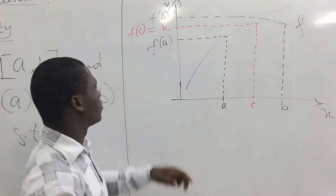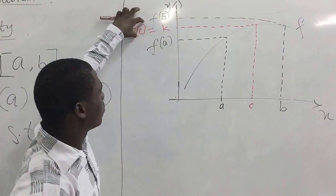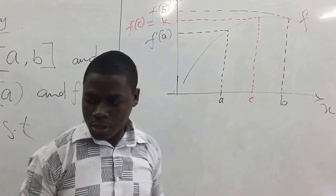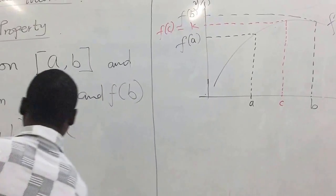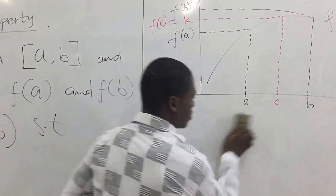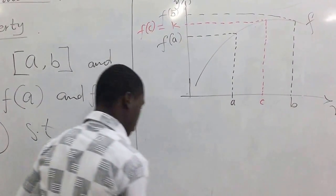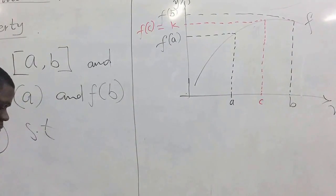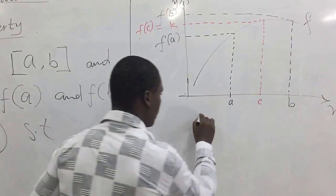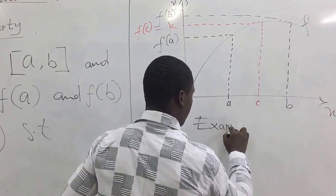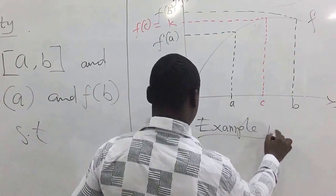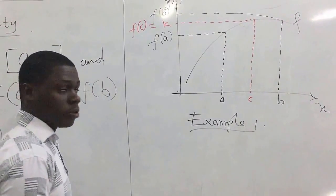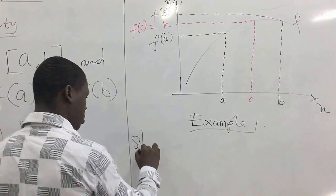We have a closed interval in which the function is continuous, and within this interval there is a certain constant such that the function value f(c) equals f(k). Our task here is to look at examples where we have to see whether certain functions satisfy the box property, so let's pick an example — that is the application of the box property.